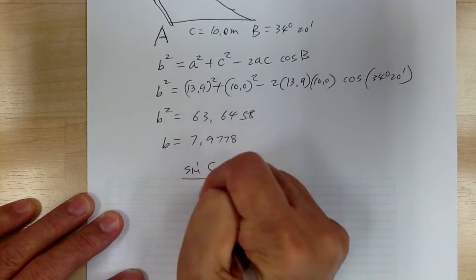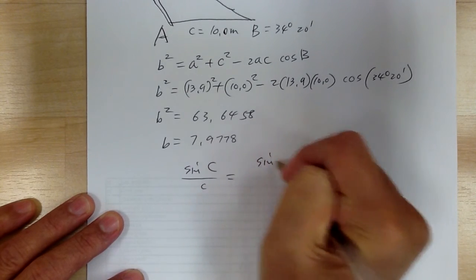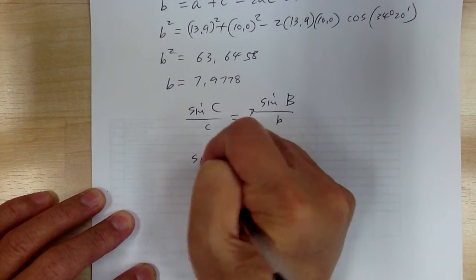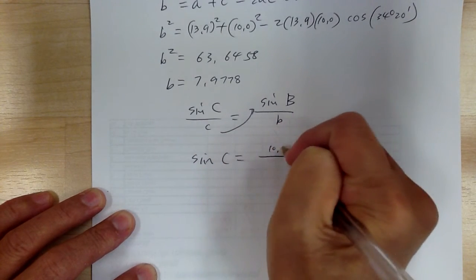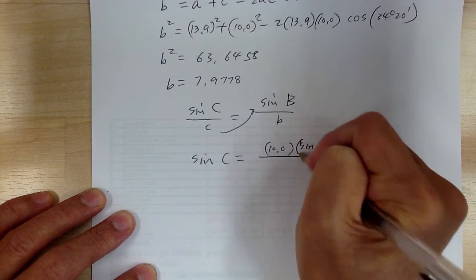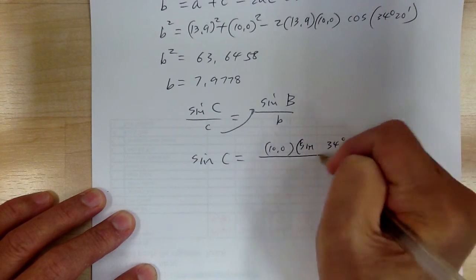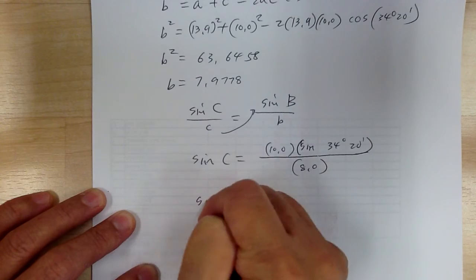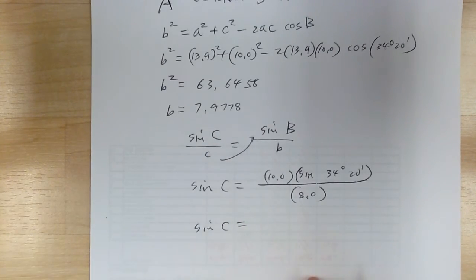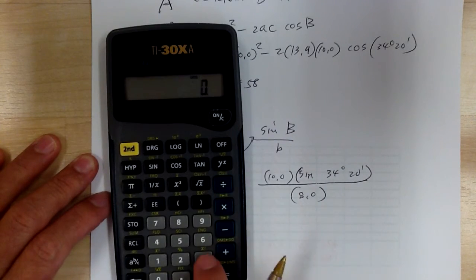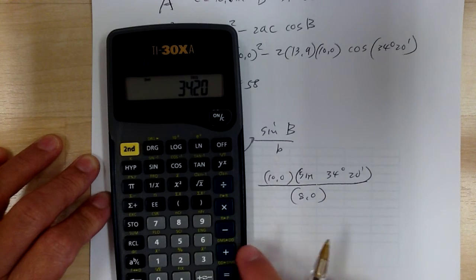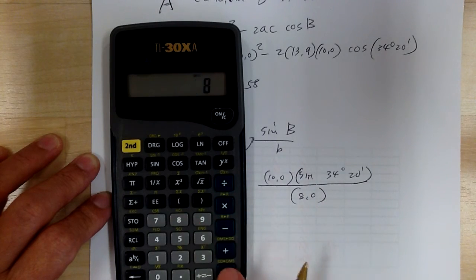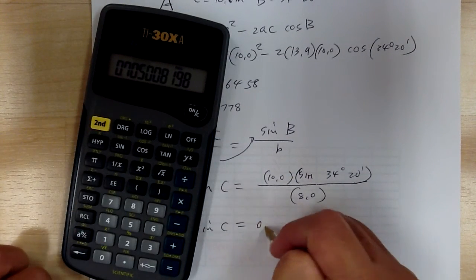So you set up: sine C over small c equals sine B over small b. Rearranging, sine C equals small c times sine of B divided by small b. So sine C equals 10.0 times sine of 34 degrees 20 minutes, divided by 8.0. Get your calculator, convert 34 degrees 20 minutes into decimal degrees, take the sine, times by 10, divided by 8, push equal. So sine of C equals 0.7050.